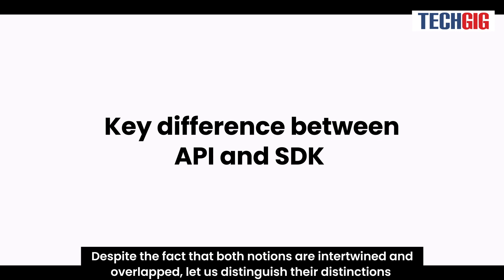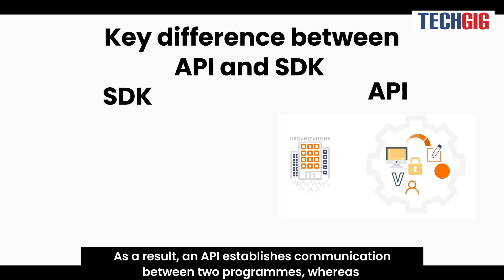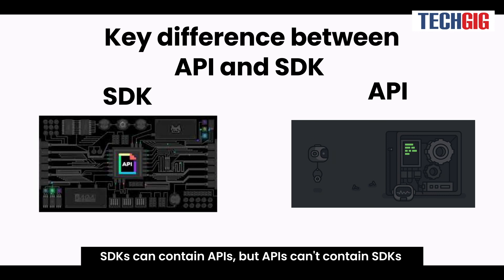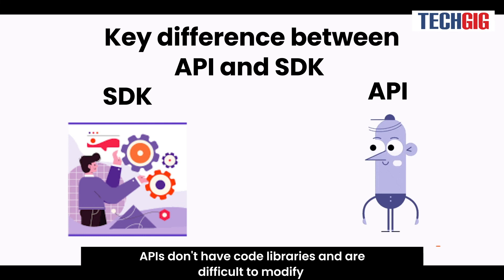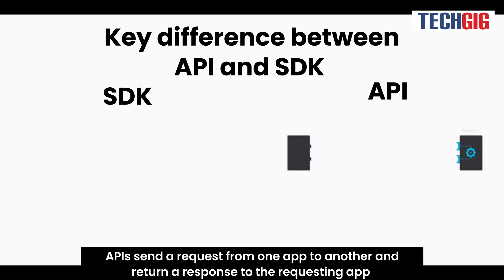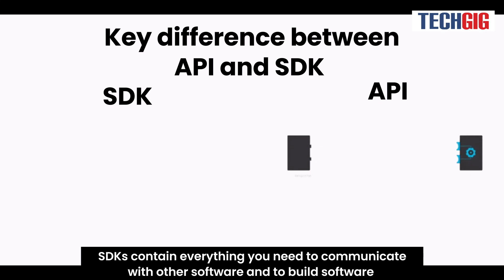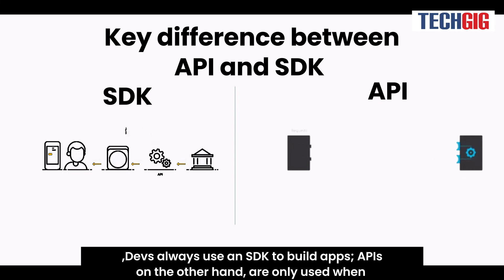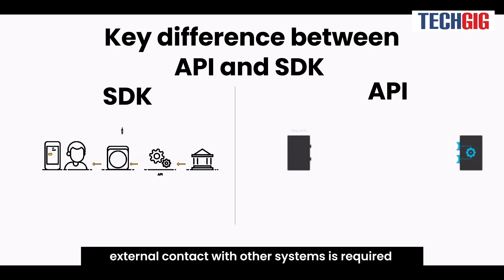Despite the fact that both notions are intertwined and overlapped, let us distinguish their distinctions. An API establishes communication between two programs, whereas an SDK is the toolkit required to develop applications. SDKs can contain APIs, but APIs cannot contain SDKs. SDKs are easier to use and integrate than APIs. APIs don't have code libraries and are difficult to modify. APIs send a request from one app to another and return a response to the requesting app. SDKs contain everything you need to communicate with other software and to build software. Developers always use an SDK to build apps, while APIs are only used when external contact with other systems is required.